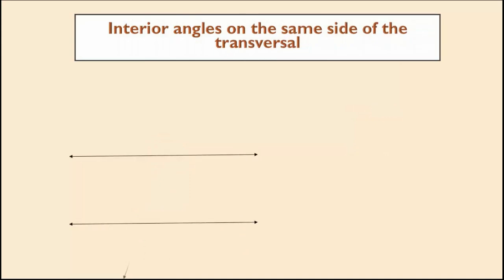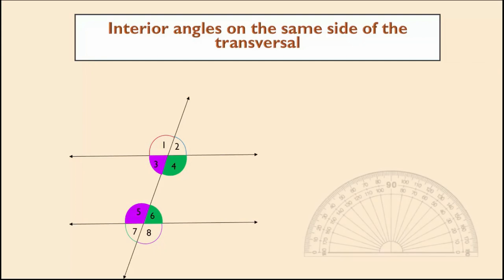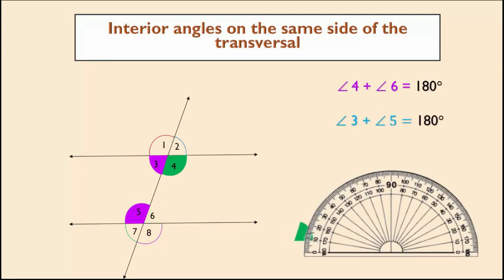Interior angles on the same side of a transversal are also referred to as consecutive interior angles, allied angles, or co-interior angles. The sum of these allied angles is exactly 180 degrees when a transversal intersects two parallel lines. Here, angle 4 plus angle 6 equals 180 degrees, and angle 3 plus angle 5 equals 180 degrees.